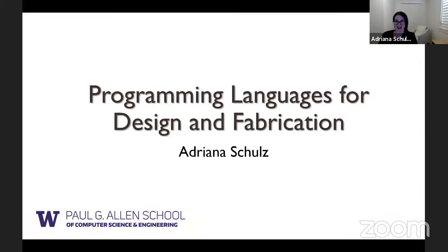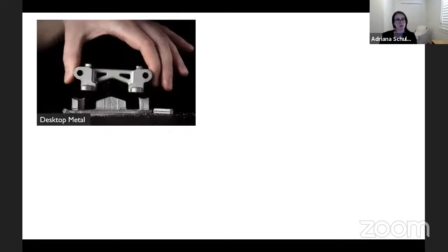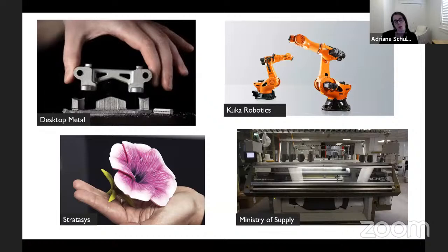Today I want to talk about programming languages for design and fabrication. Let me start with a brief introduction of the work that I do. In my group, we do research on computational design for manufacturing. We're excited about what people are calling the next manufacturing revolution — there's tremendous progress in manufacturing hardware: 3D printers, industrial robots, knitting machines, and more. All these tools point towards a revolution in the types of objects we can make and who can make them, enabling batch-of-one production of designs with unprecedented complexity and functionality.